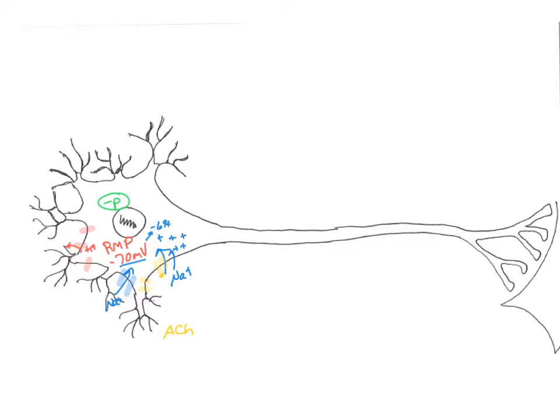As more sodium diffuses into the cell through gated channels, the positive charges are funneled down towards the axon hillock. The axon hillock acts as a funnel, gathering those positive charges, and the transmembrane potential may get as high as negative 61 millivolts without creating an action potential. The charge from negative 69 to negative 61 millivolts is called a graded potential.